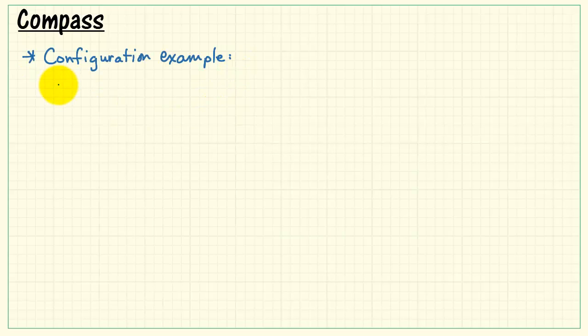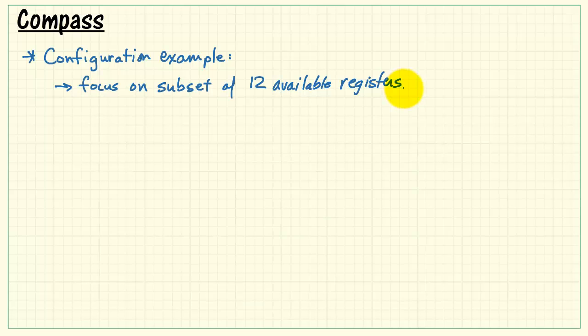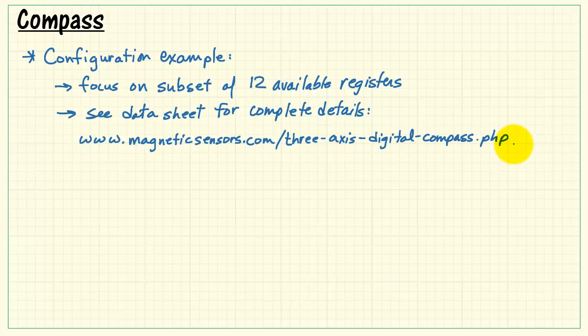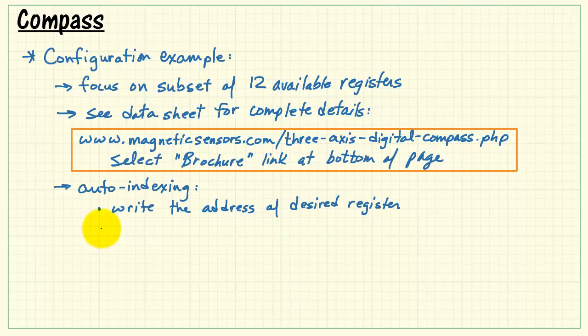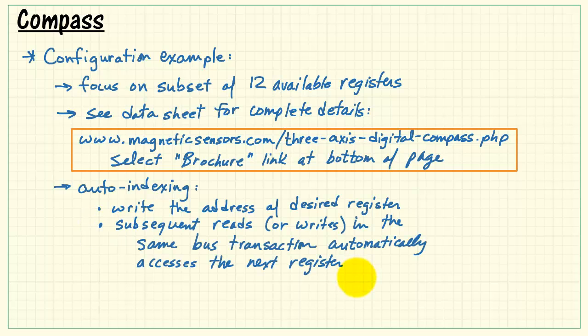All right, now that we have some of these compassing principles in mind, let's take a look at a specific configuration example for the Honeywell 3-axis compass. I'll focus on a subset of the 12 available registers and ask that you see the data sheet for complete details. I have the URL for the compass product here. Please select the brochure link at the bottom of the page.